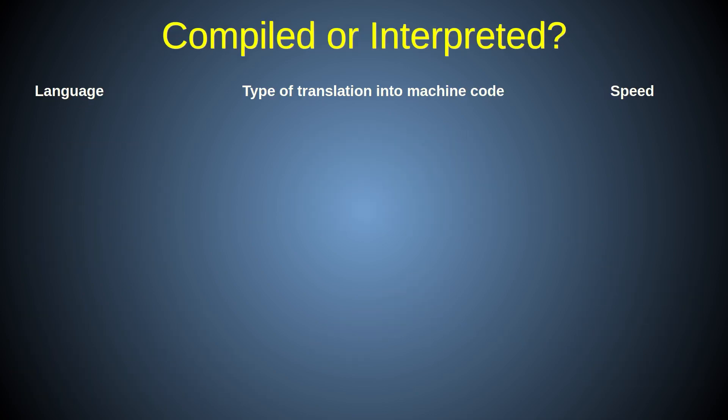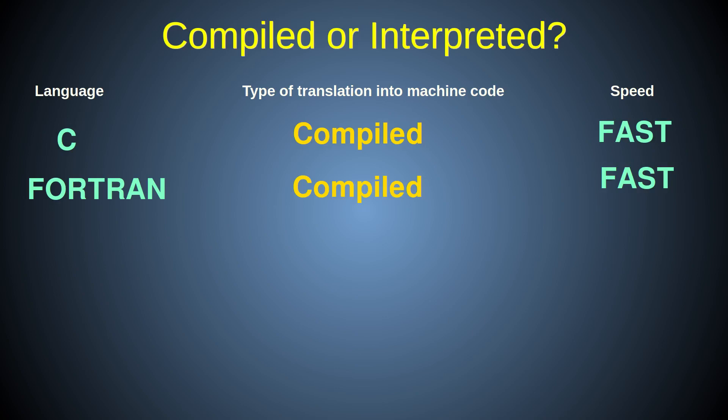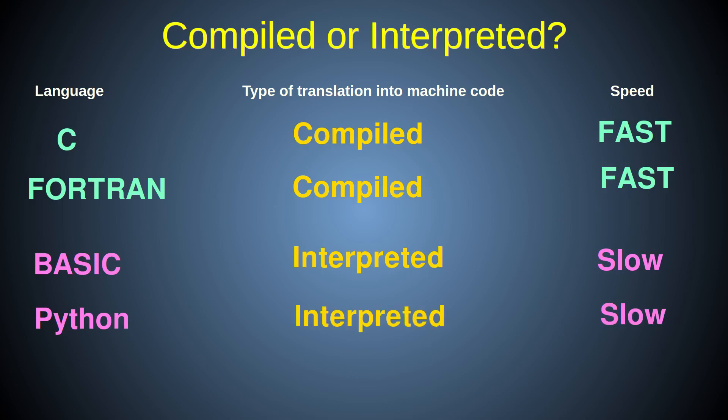Historically, high-level languages designed to be interpreted are different to high-level languages designed to be compiled, although especially more recently both compilers and interpreters have been written for many high-level languages, including the C programming language.